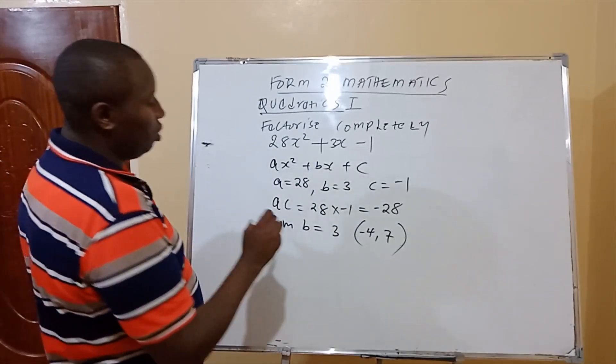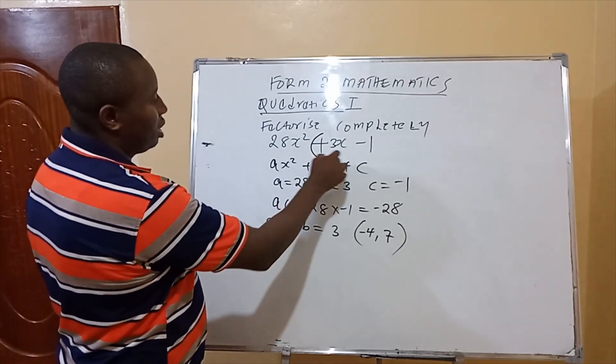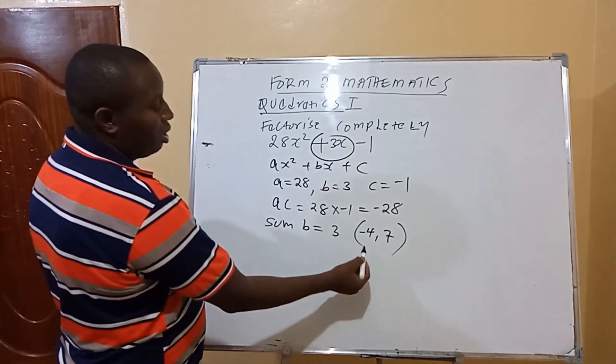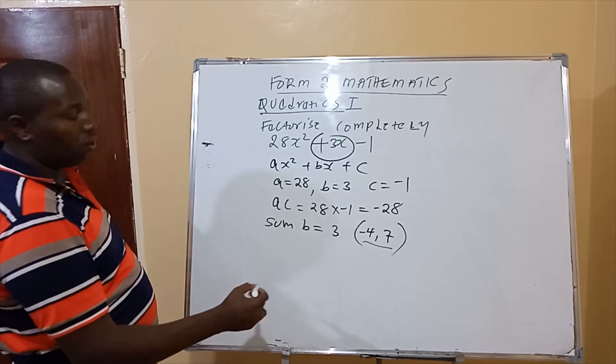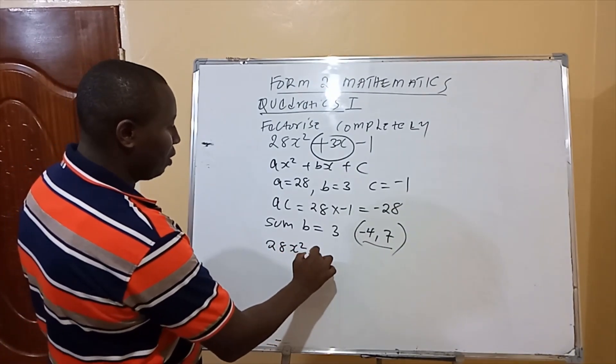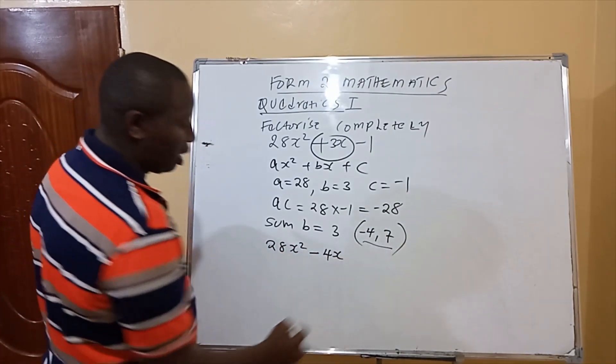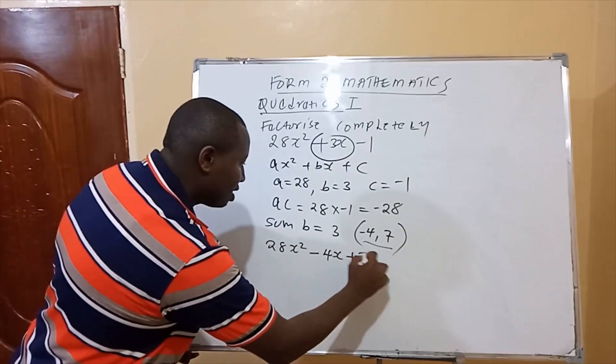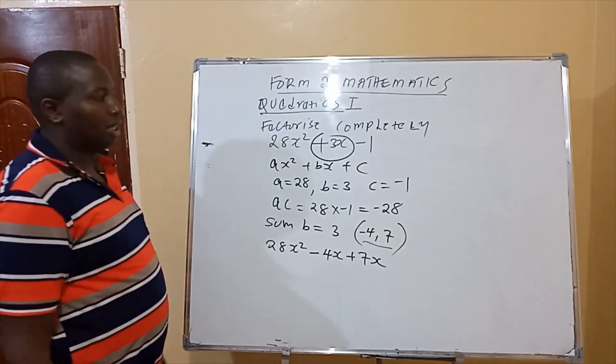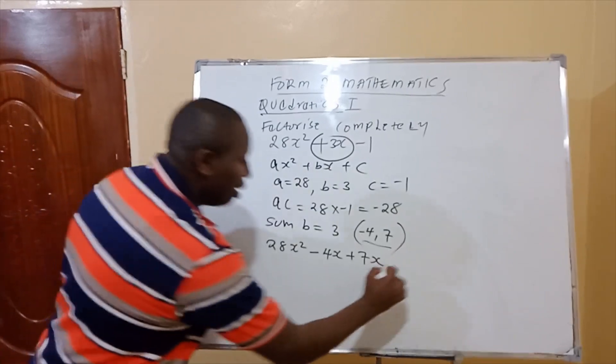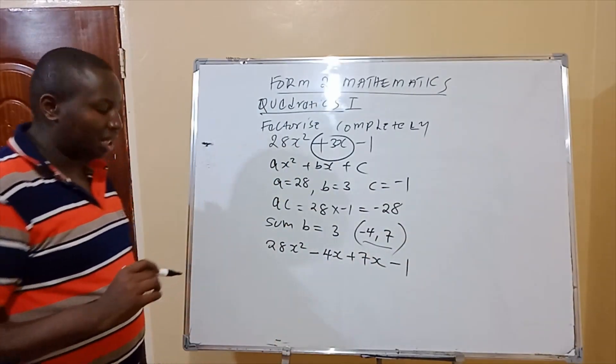So therefore, you now replace this. This plus 3x, you replace with minus 4x and 7x. So you write 28x squared minus 4x plus 7x, like that, then minus 1.